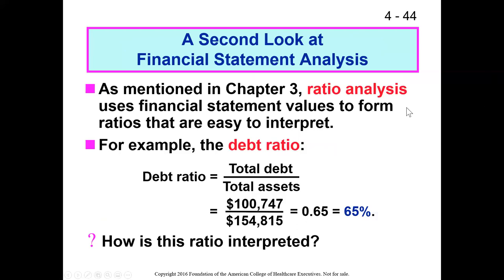We're finished with the actual statements — both the balance sheet and the cash flow. We're going to conclude this discussion with two more ratios. We ended Chapter Three with a discussion of profit margin and operating margin, and now we'll do two more ratios at the end of Chapter Four: the debt ratio and the current ratio.